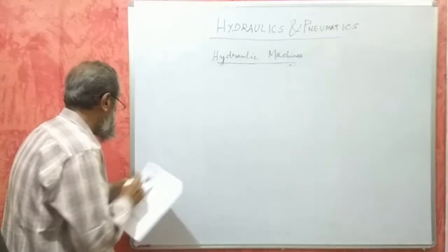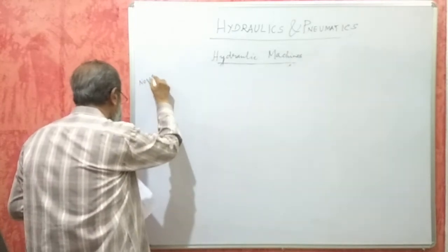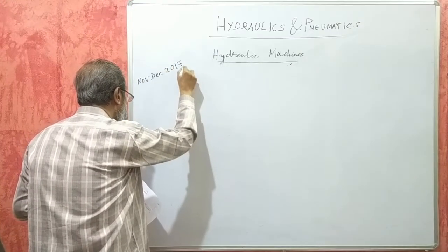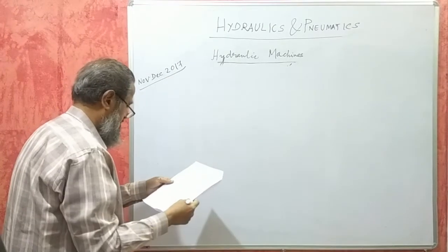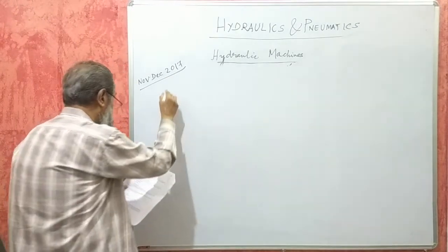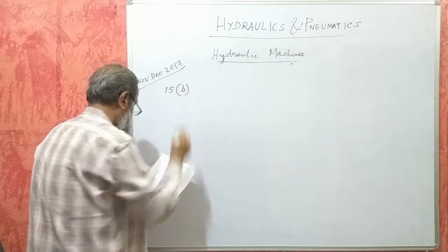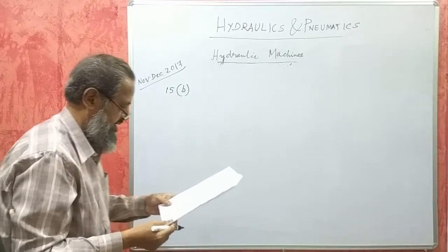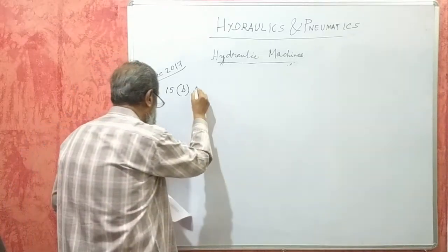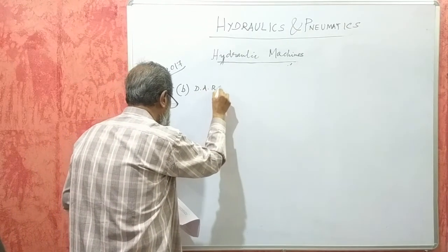November/December 2017, question number 15B for 6 marks. The question goes like this: a double acting reciprocating pump...